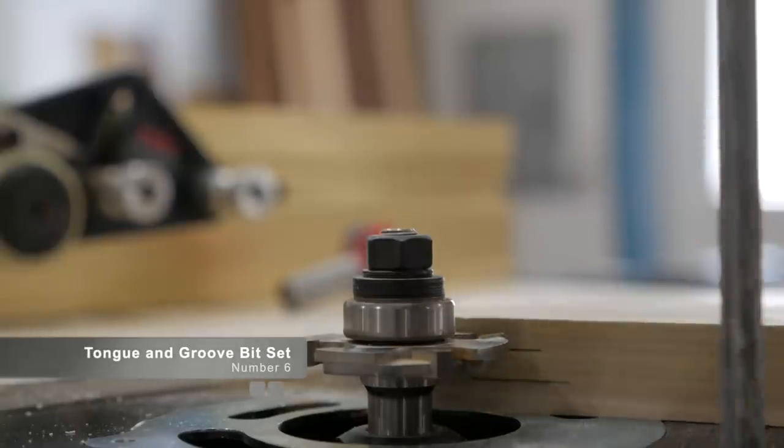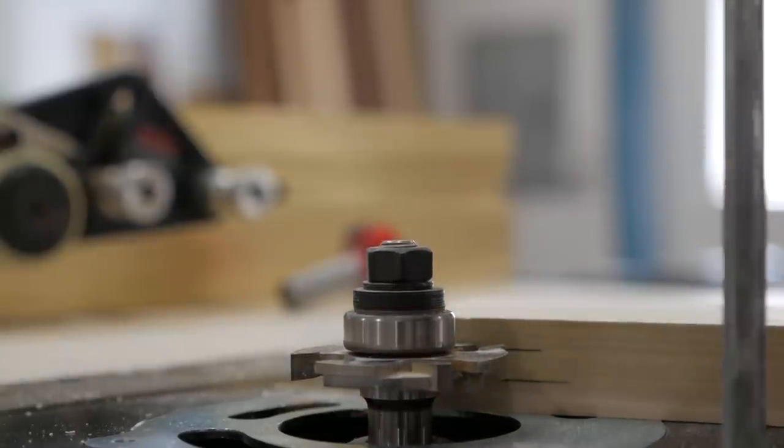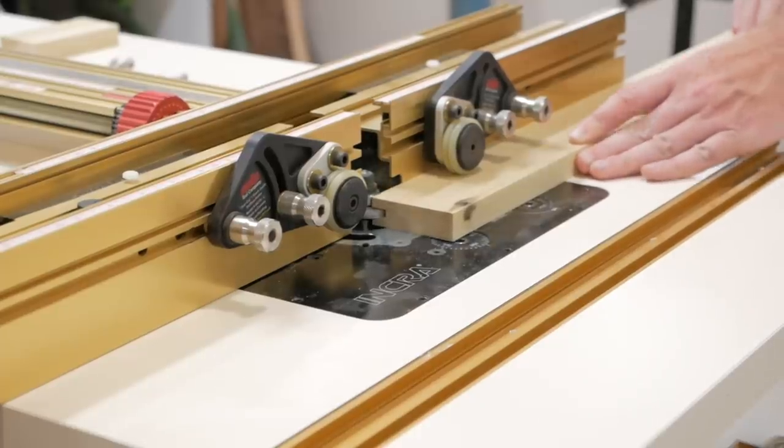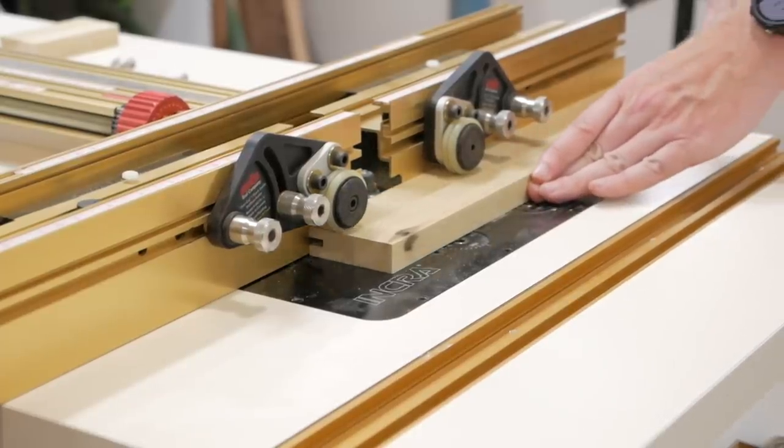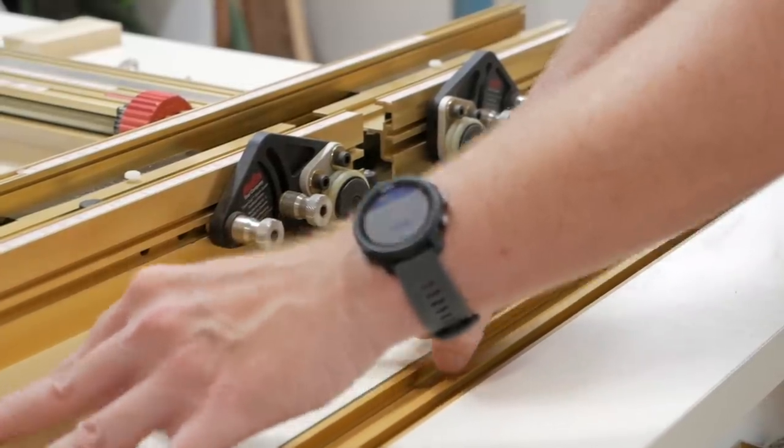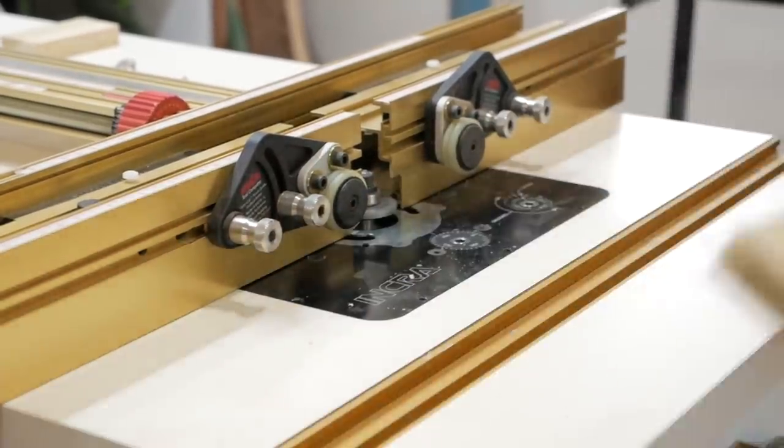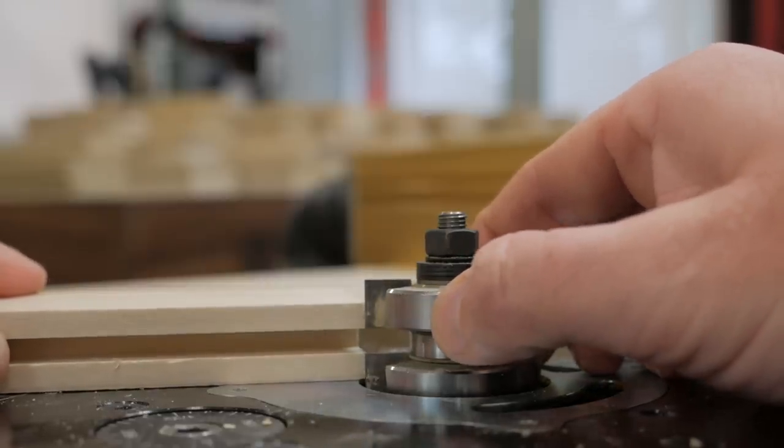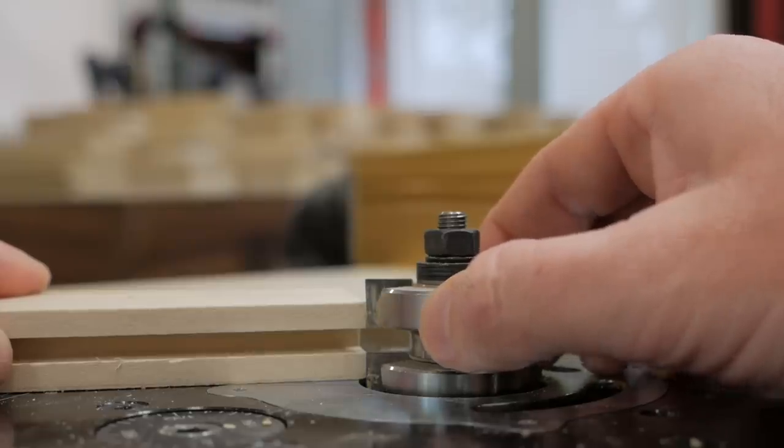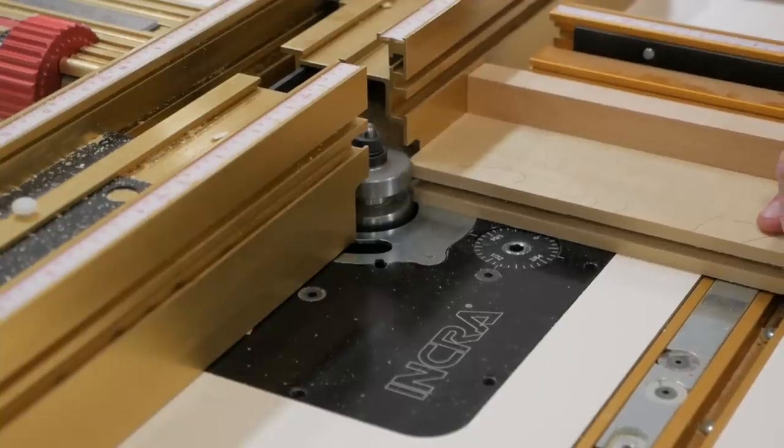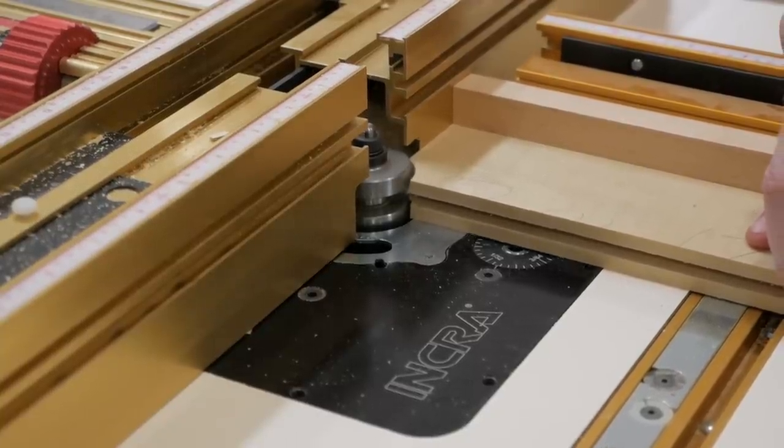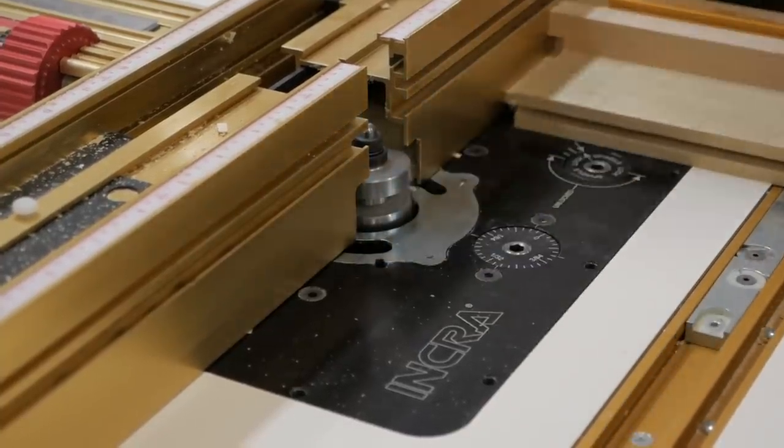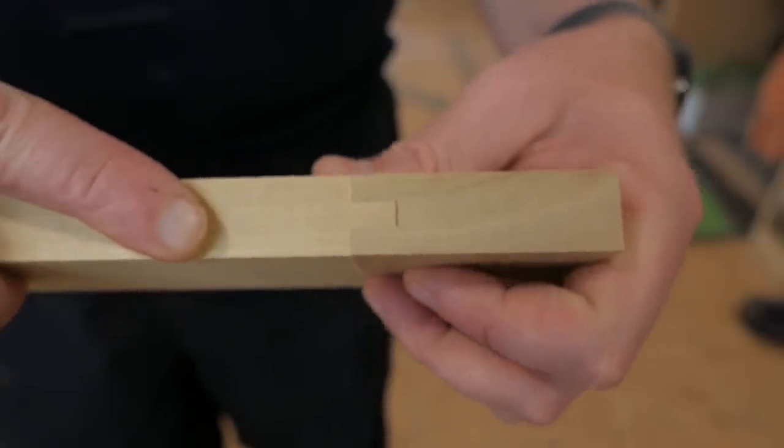Item number six is this tongue and groove bit set. It's something that I decided to invest in when I began doing a lot more cabinet-related material and needed to produce more doors. Previously, I'd just been using a table saw, which I have an instructional video on. It's a very easy, simple way to do it. However, when I'm doing a lot of doors, like on my current kitchen project, I wanted to have something that was going to make it a lot easier. These bits are fully adjustable. This set specifically is a Freud tongue and groove bit set. It has made my life a lot easier when doing multiple doors.